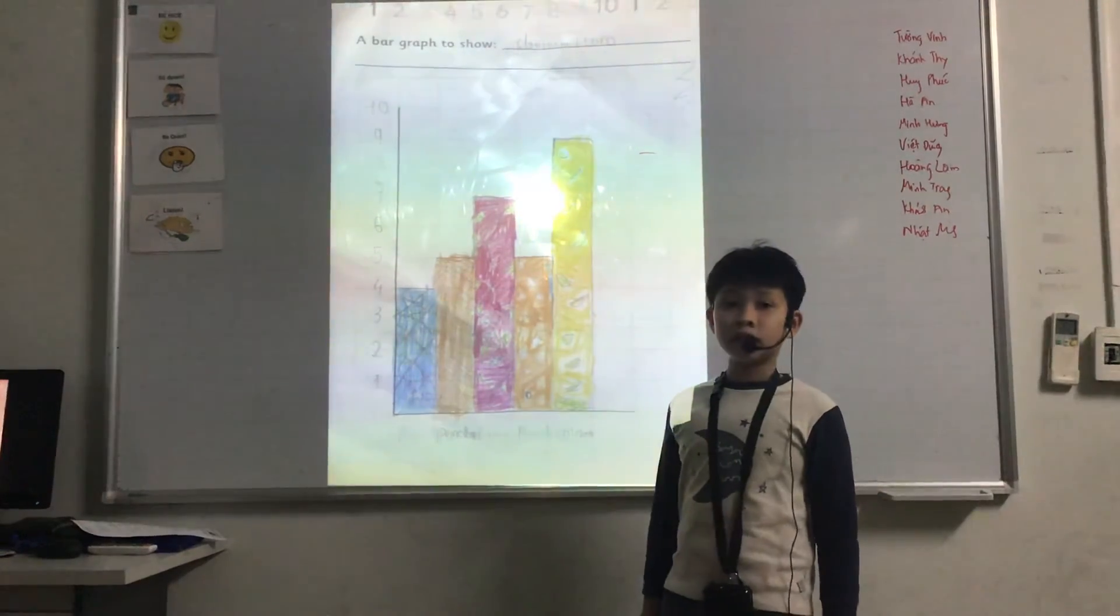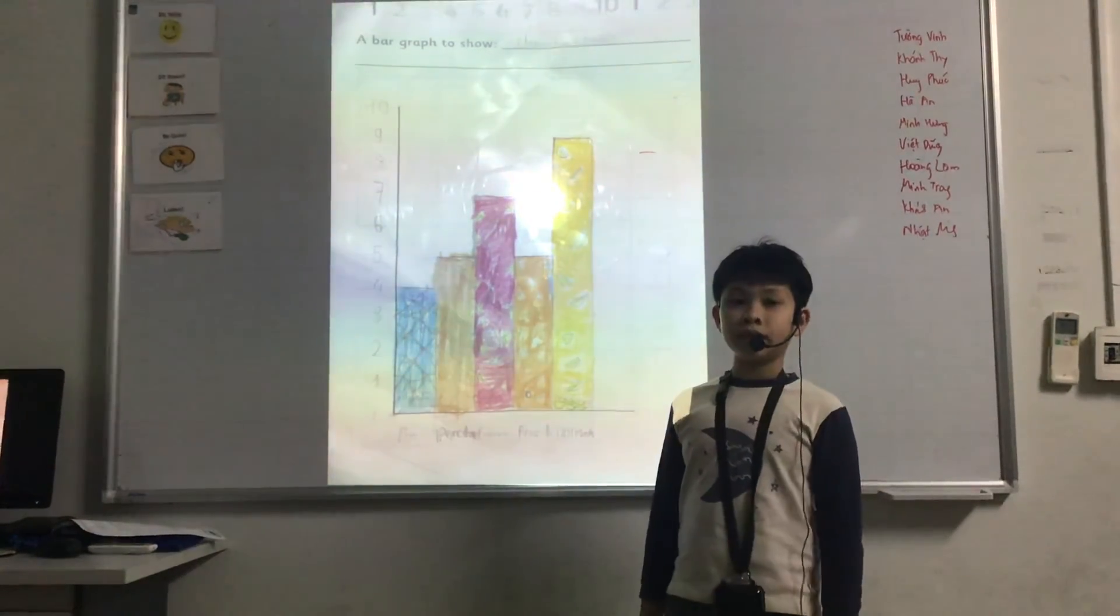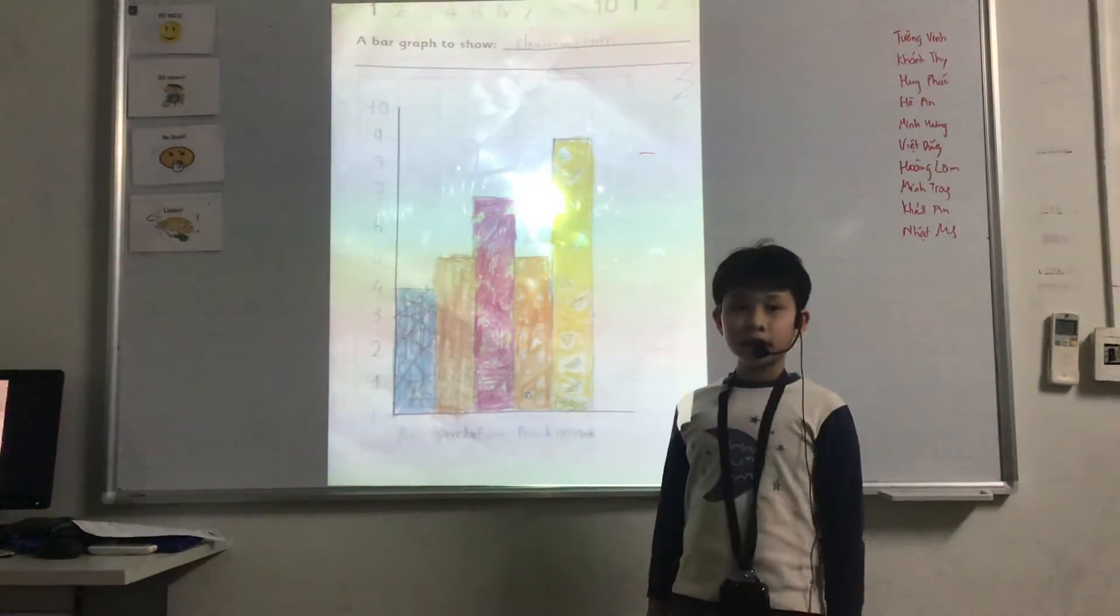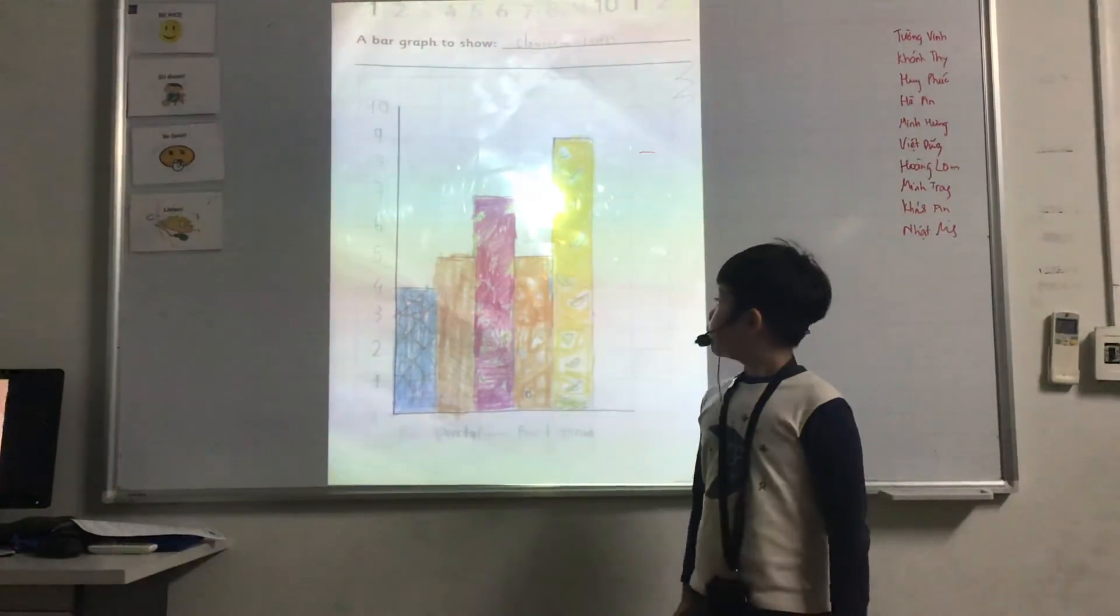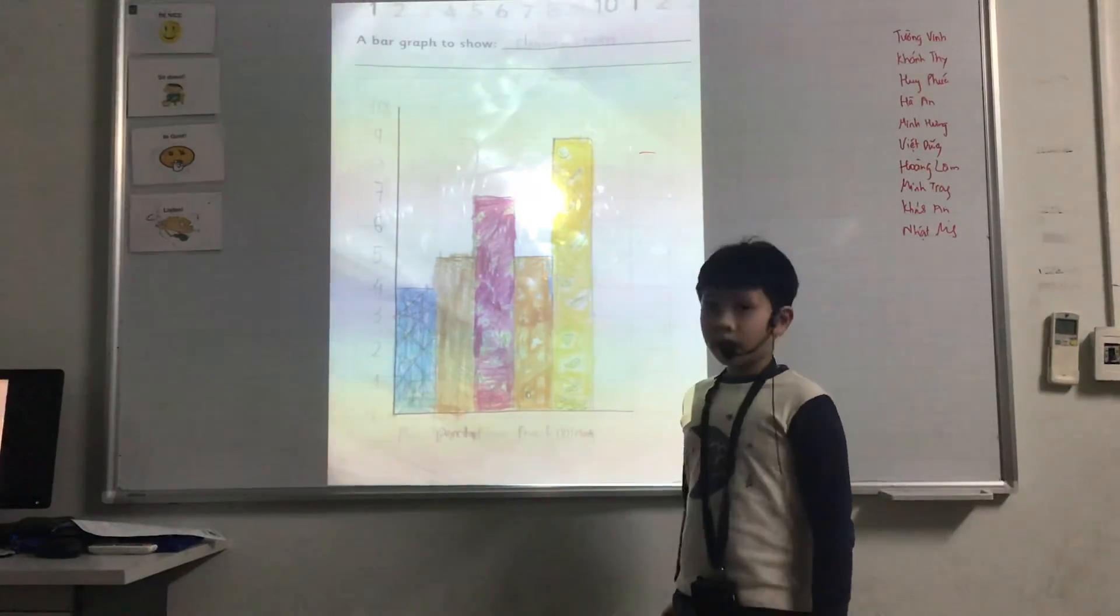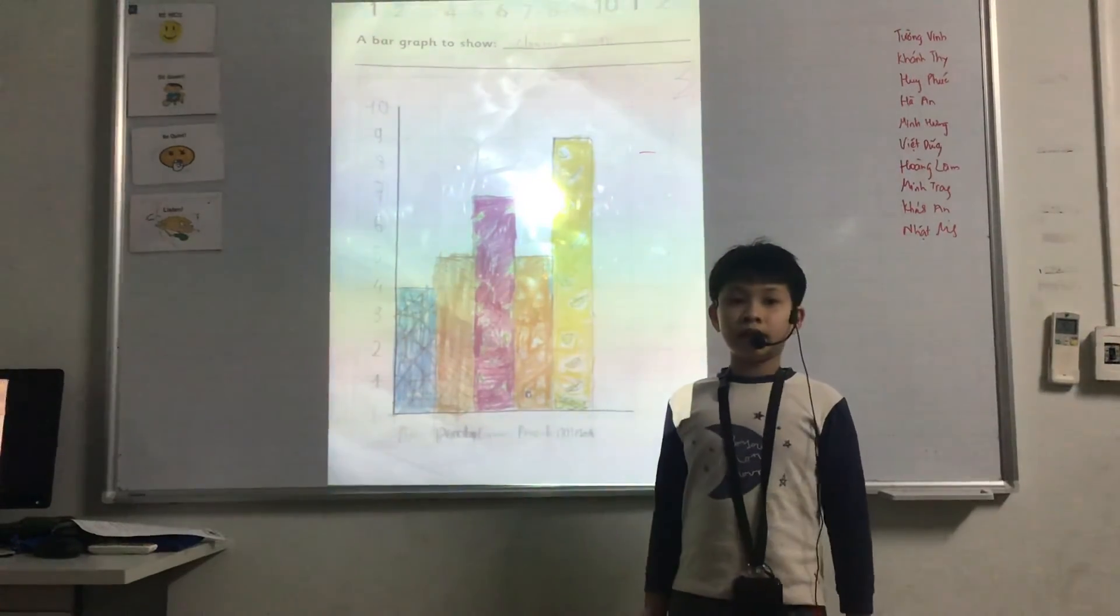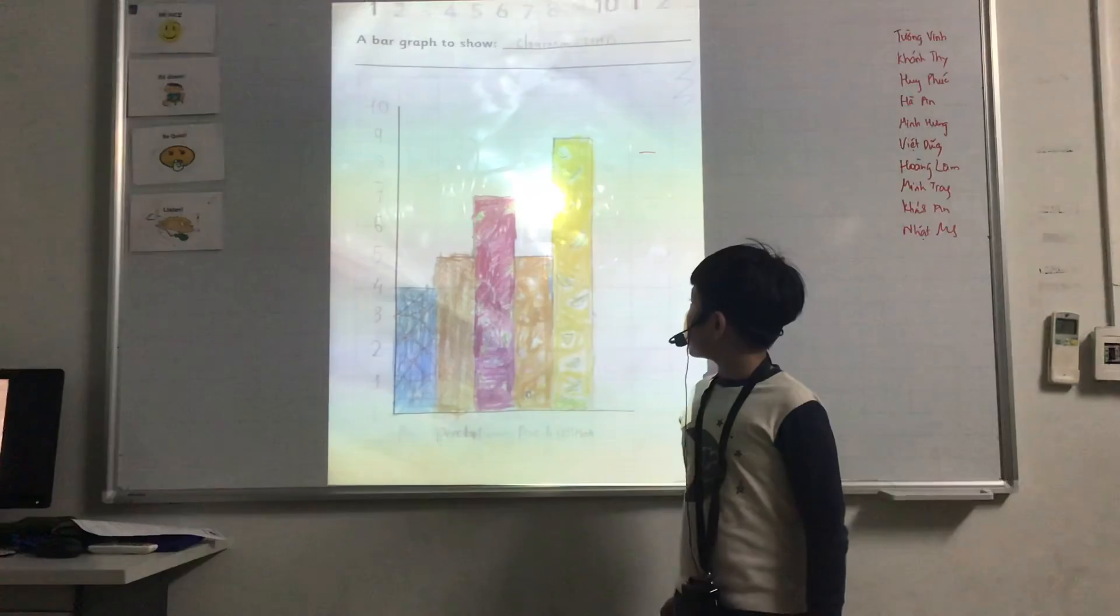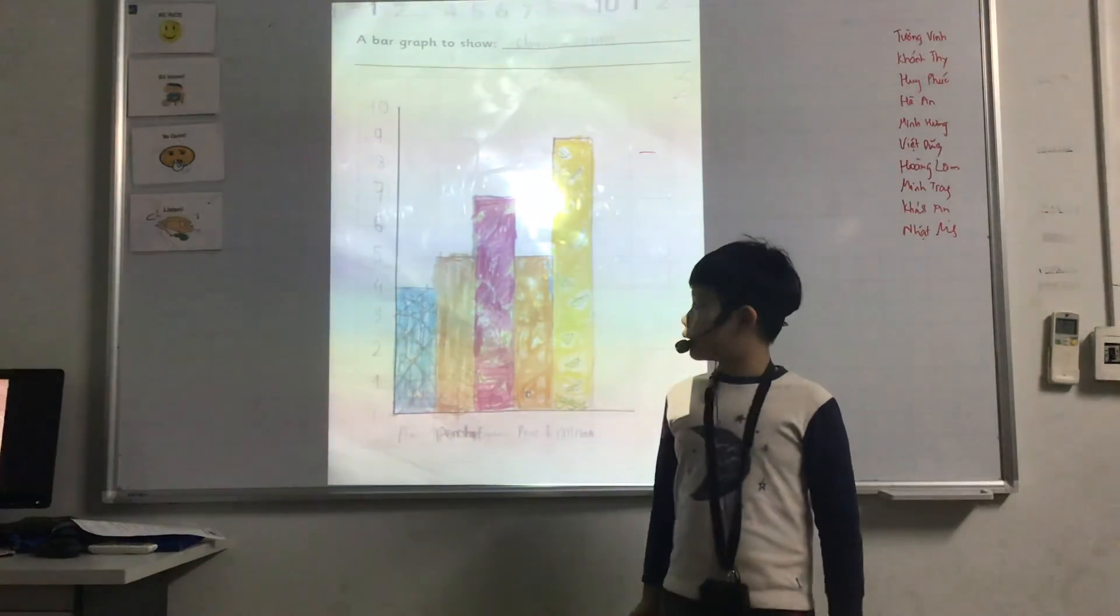The difference between the least and the greatest are 5 because 9 minus 4 equals 5.